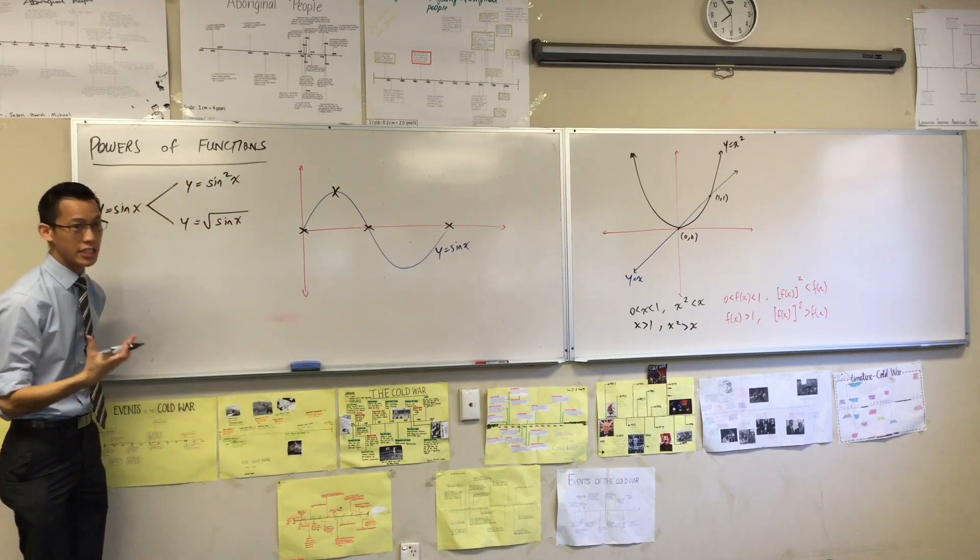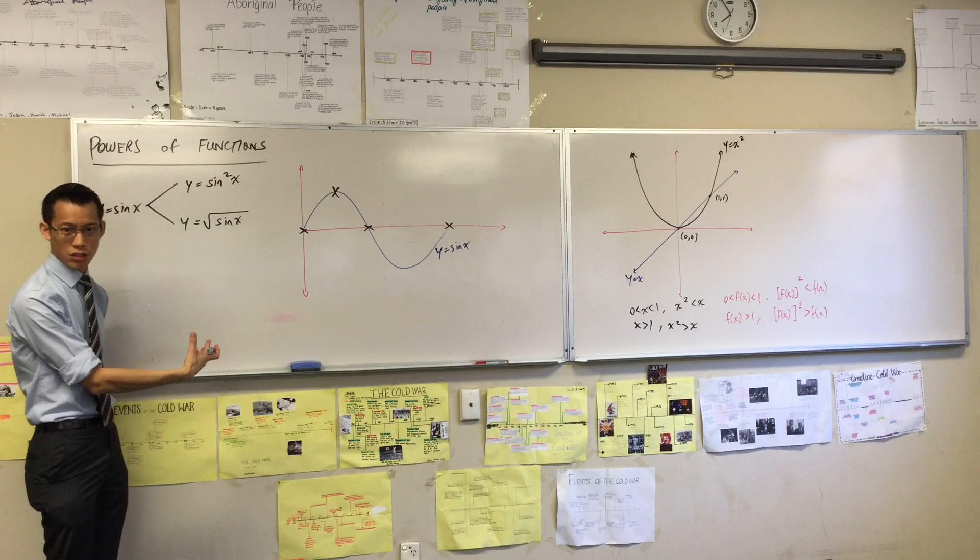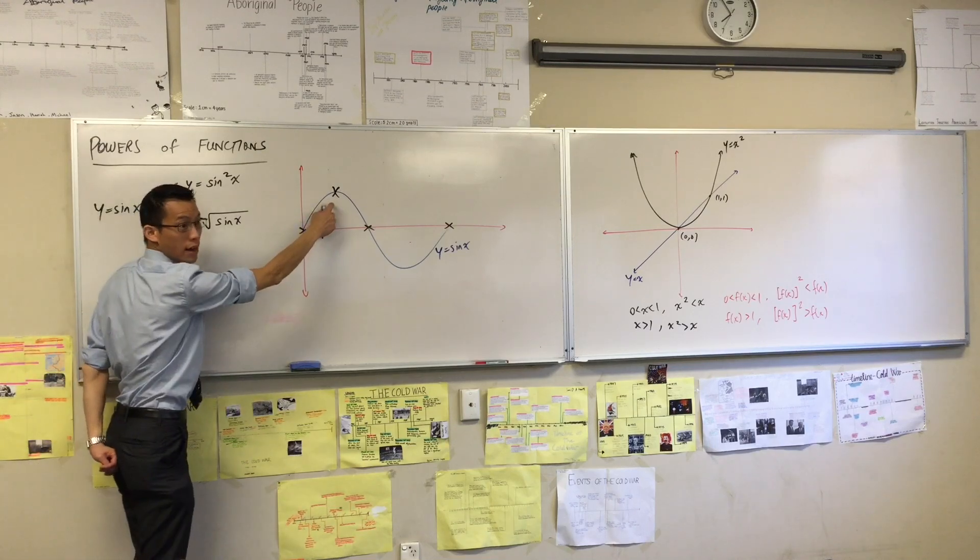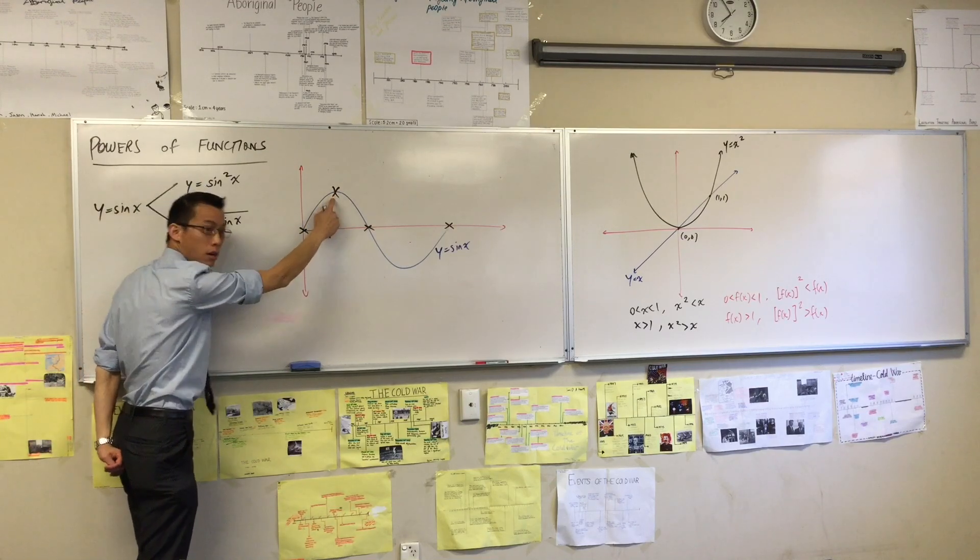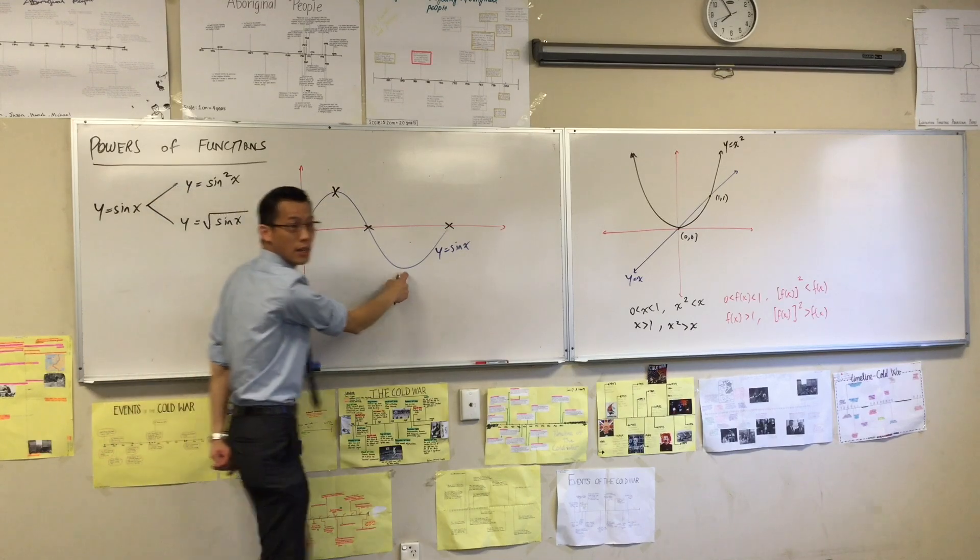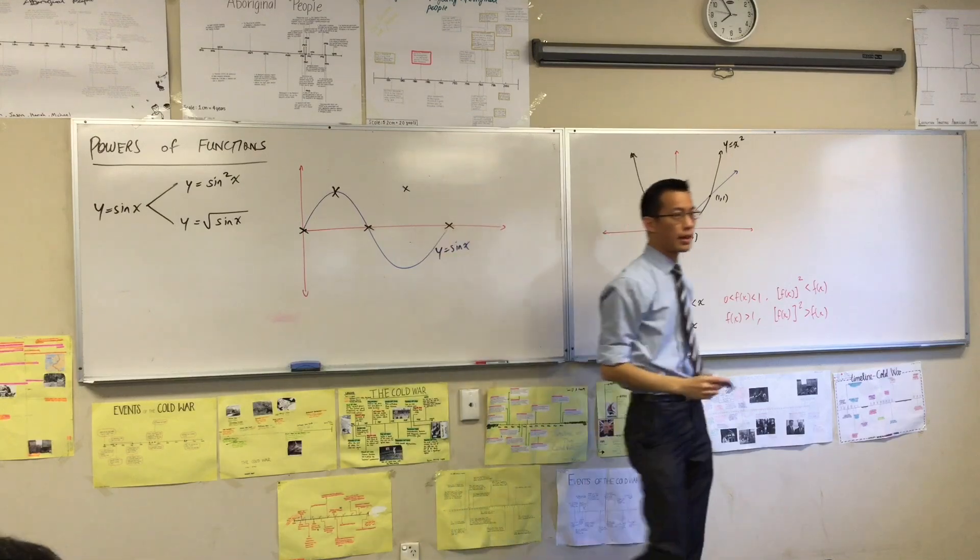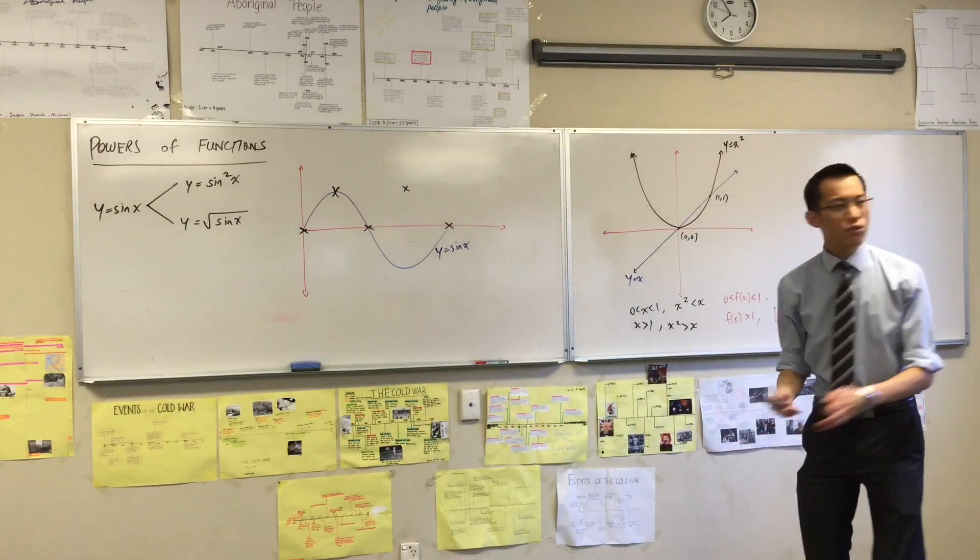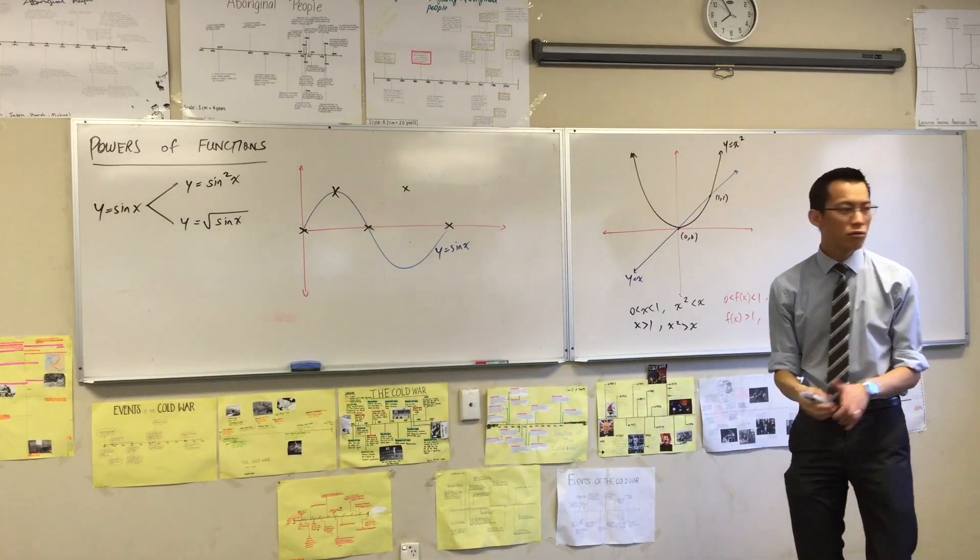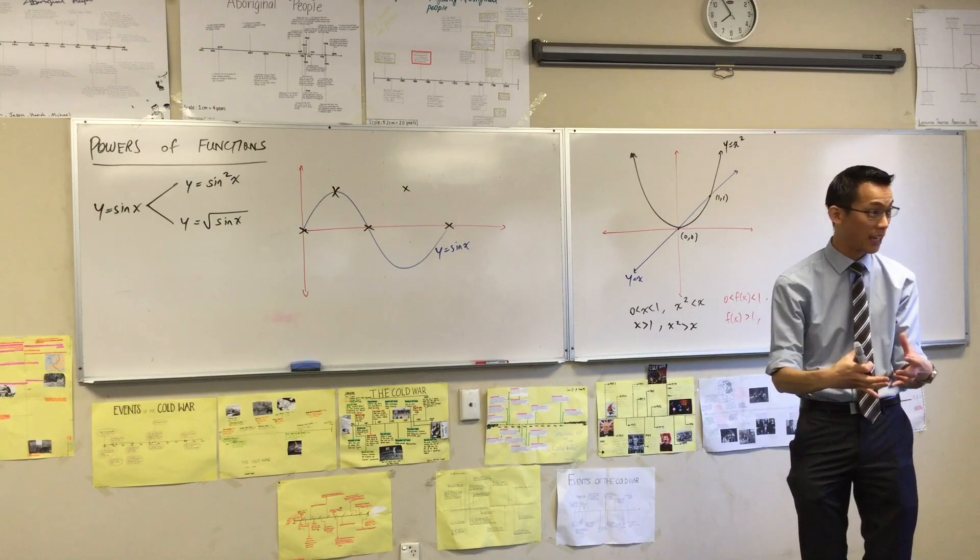Now there's one more predictable spot, which is not a point of intersection, but we can get it in the same way that we just got this one here. You square one, you get one. There's another value I can square that will give me one. Negative one, down here. So when I square negative one, it's also going to give me one. Now keep in mind, when you square something, you lose the information on whether that thing was positive or negative.